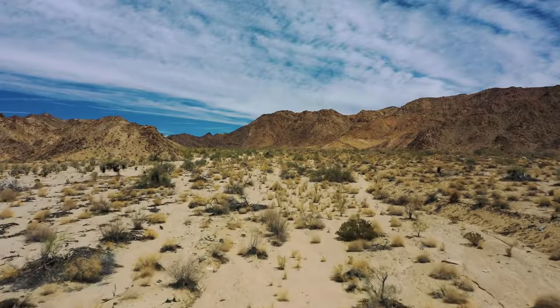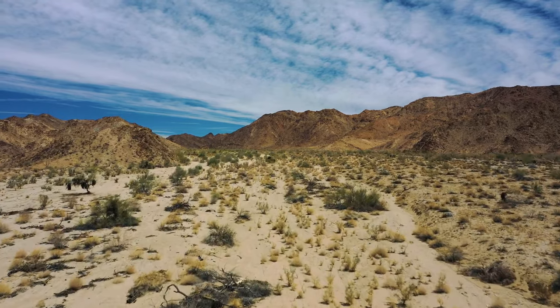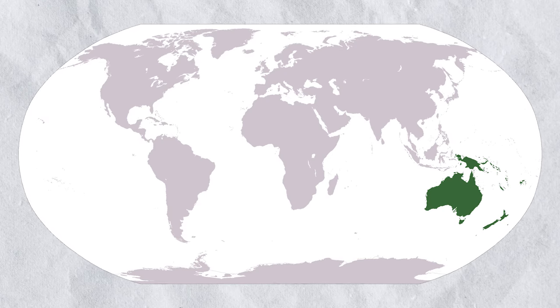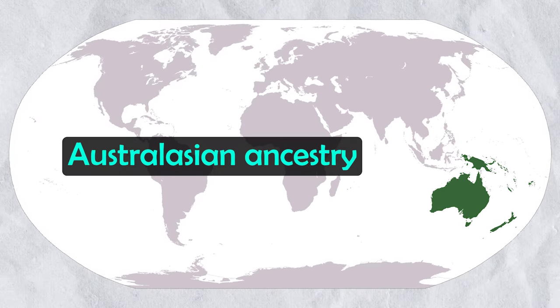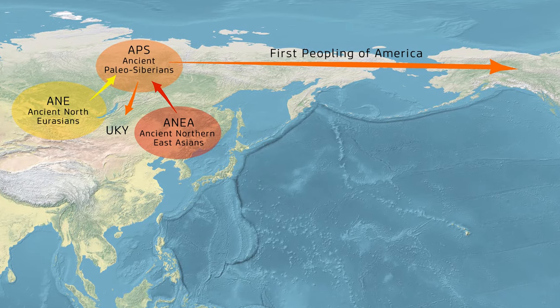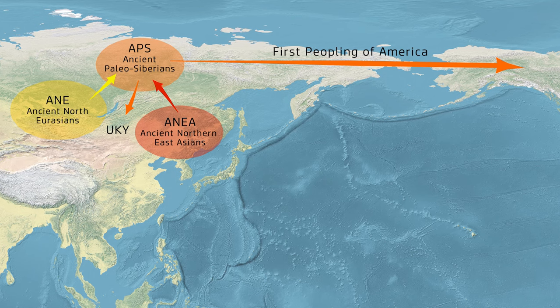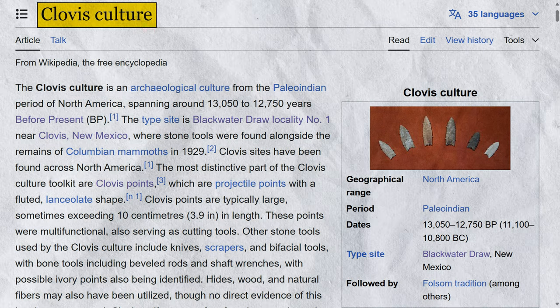Later migrations also added further genetic diversity to the indigenous peoples across the Americas, with certain peoples in South America having some Australasian ancestry for instance, yet most indigenous peoples share a common lineage traceable to ancient Siberian and Northeast Asian populations. The early peopling of America is associated with various ancient peoples, including the Clovis culture, which takes its name from Clovis points found across America.